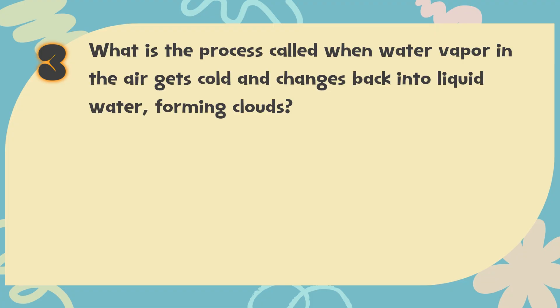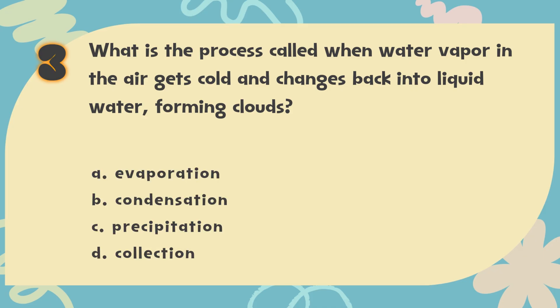Number 3. What is the process called when water vapor in the air gets cold and changes back into liquid water, forming clouds? The choices are: A. Evaporation, B. Condensation, C. Precipitation, D. Collection.